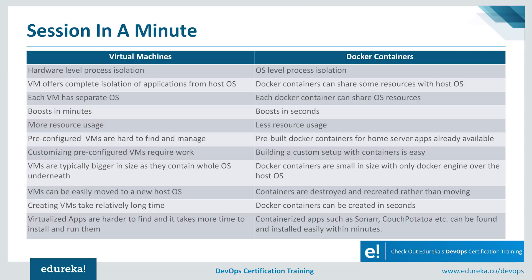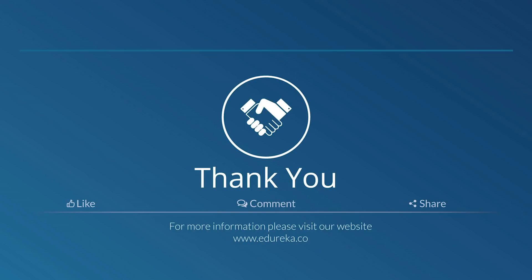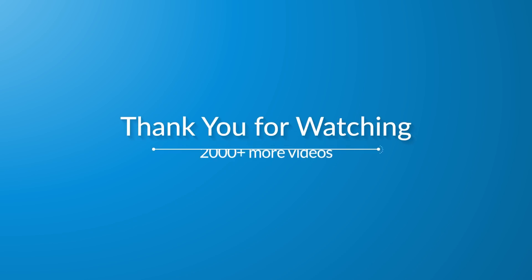As a general rule of thumb: virtual machines are a better choice for running applications that require all operating system resources and functionalities, or where you need to run multiple applications on servers with a wide variety of operating systems. Containers are a better choice when your biggest priority is maximizing the number of applications running on a minimal number of servers. In many situations, the ideal setup includes both — the flexibility of virtual machines and the minimal resource requirements of containers work together to provide environments with maximum functionality.